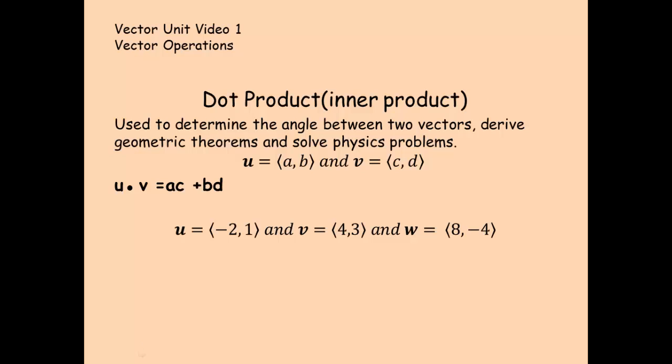And the one that you've not seen before, something that cannot really be applied to the areas of mathematics that we've covered so far, is the dot product. And the dot product is used to determine the angle between two vectors. So if you've got two vectors drawn on your graph and we wanted to find the angle that falls between them, we would use the dot product. It also is used to derive geometric theorems and to solve different physics problems. So when we get to some of our application problems, we're going to revisit the dot product.